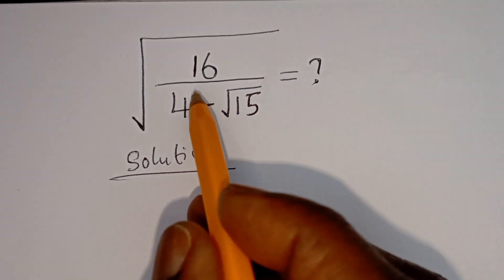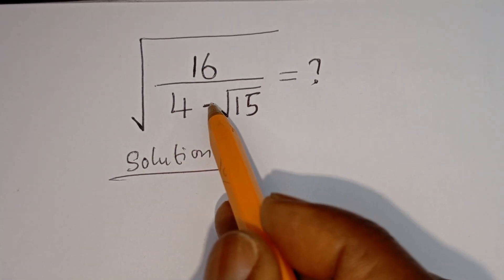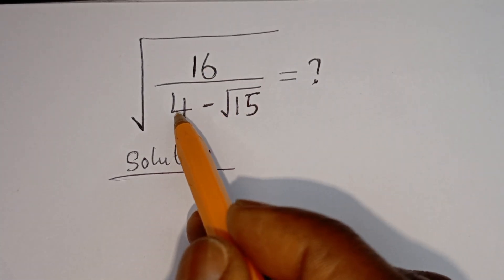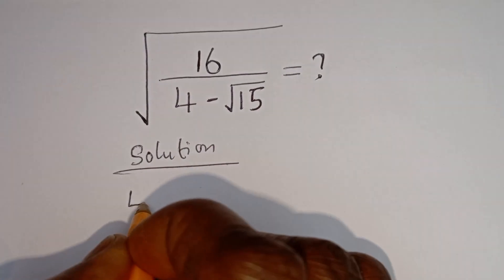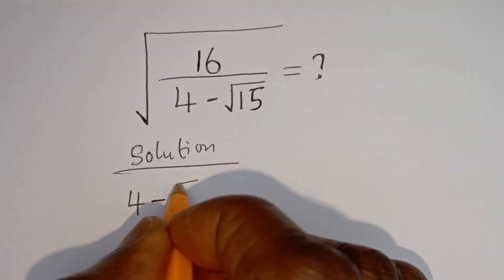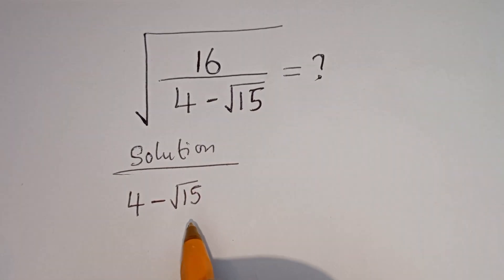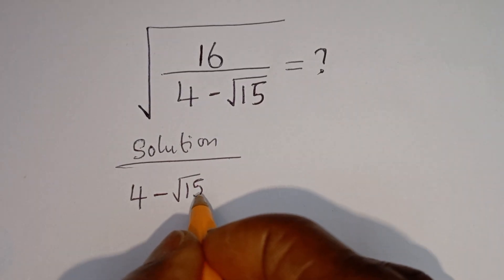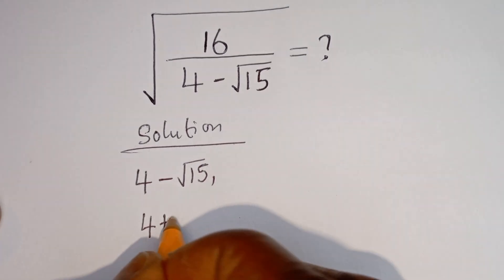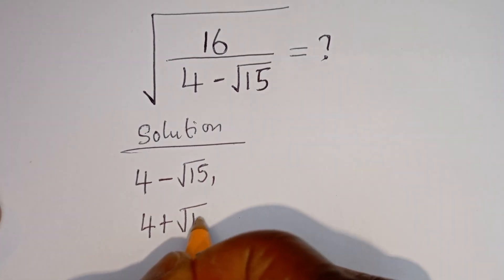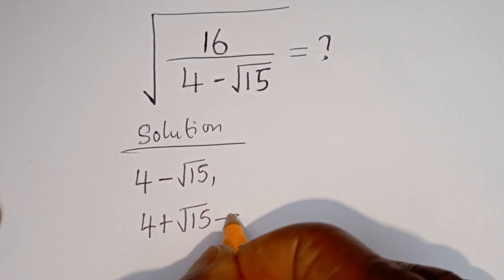What we need to do here is to multiply both the numerator and denominator by the conjugate of the denominator. The denominator is 4 minus square root of 15, so the conjugate will be 4 plus square root of 15.